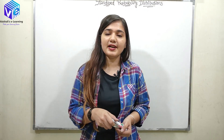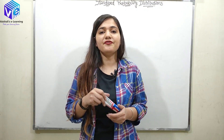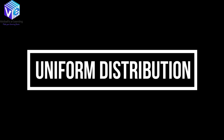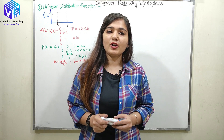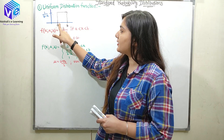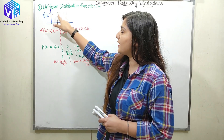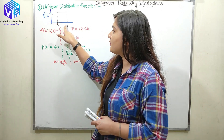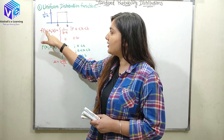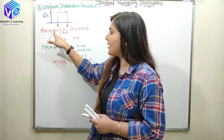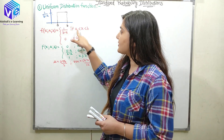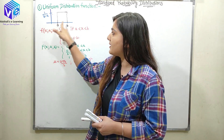If I talk about continuous random variable distribution functions, the first distribution function I am going to discuss is the uniform distribution function. As the name suggests, it is uniform in some particular limit — from A to B. It is having a constant value which is 1/(B minus A) in the interval A to B. Its PDF can be represented as f(x, A, B) = 1/(B−A) when x is between A and B, and 0 otherwise.